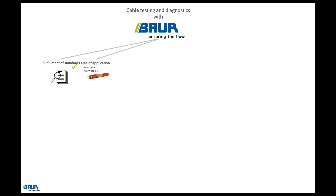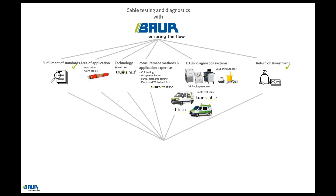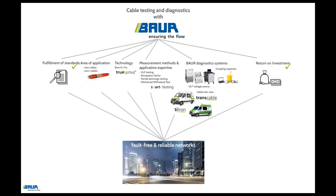0.1 Hz sinusoidal voltage offers optimal preconditions for the use of VLF, dissipation factor measurement, and partial discharge testing, and for the combined variant, the monitored withstand test. The measuring equipment ranges from portable variants to integration in the trans-cable or titran cable test vans. The systems from Baur permit precise and efficient cable testing and diagnostics for fault-free and reliable cable networks.